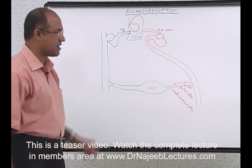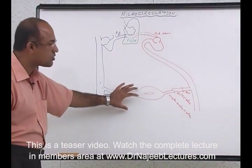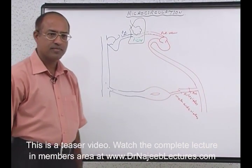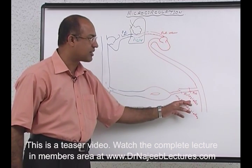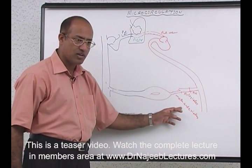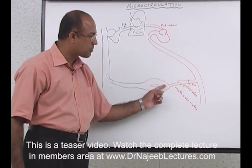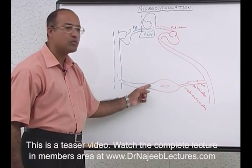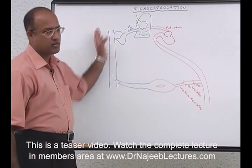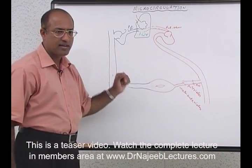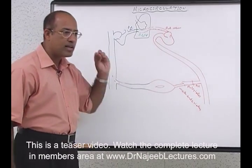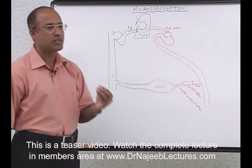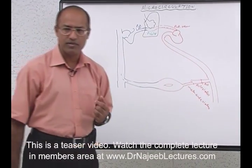In this diagram, one component of microcirculation is missing. I have shown arteries, then arterioles, then meta-arterioles, which break down into capillaries, which collect into venules and then veins. But one extremely important component of microcirculation is missing — can anyone tell me what it is?